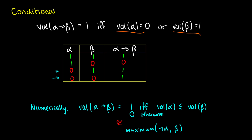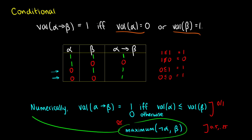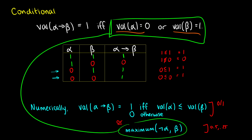If you don't like that intuition, there's a nice numerical method: the value of alpha-arrow-beta is true if and only if the value of alpha is less than or equal to the value of beta. In the first case, 1 ≤ 1, so this is true. In the second case, 1 ≤ 0 — that's not true, so the second row is false. In the third and fourth rows, 0 ≤ 1 is true, and 0 ≤ 0 is also true. Now, this only works when you're using 0s and 1s. If you're using values like 0.5 or 0.25, then you use the second form: it takes the maximum of not-alpha and beta. You'll get the same results either way.